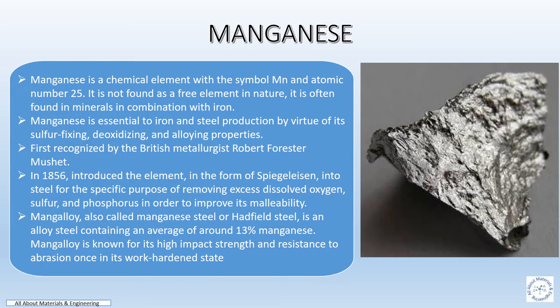Manganese is a chemical element with the symbol Mn and atomic number 25. It is not found as a free element in nature; it is found in minerals and in combination with iron. Manganese is essential to iron and steel production for properties like sulfur fixing, deoxidization, and alloying — first recognized by the British metallurgist Robert Foster Mushet in 1856, who introduced the element in the form of spiegeleisen into steel.